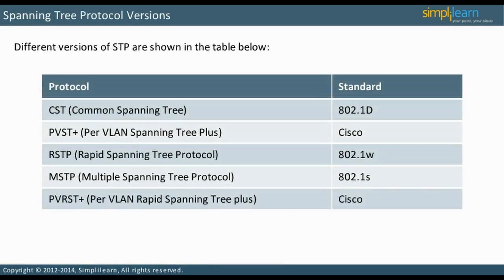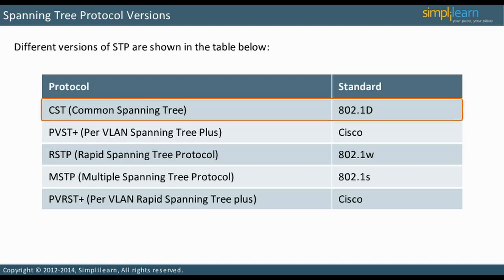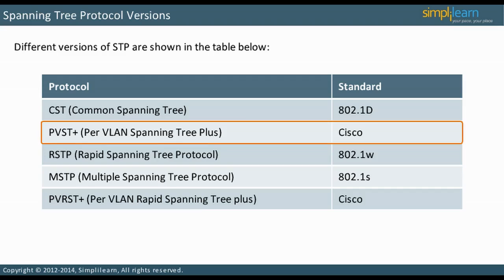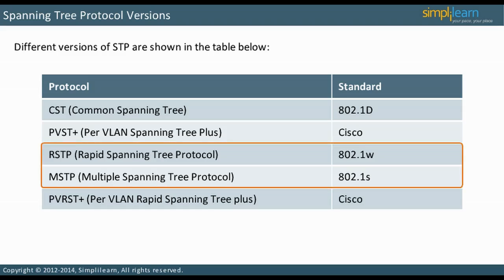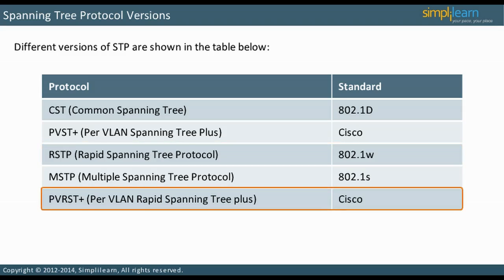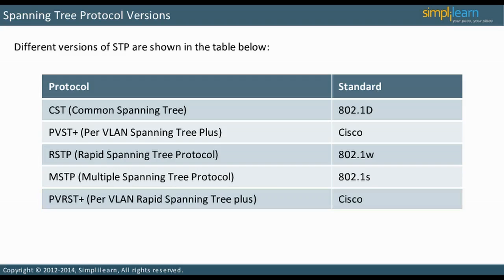There are many versions of STP. As seen in the table, the original is 802.1D, common spanning tree, CST. The default version used on most Cisco switch platforms is PVST Plus, now known as PVST. RSTP and MSTP are additional standard versions. PVRST Plus is Cisco's implementation of rapid spanning tree, RSTP.